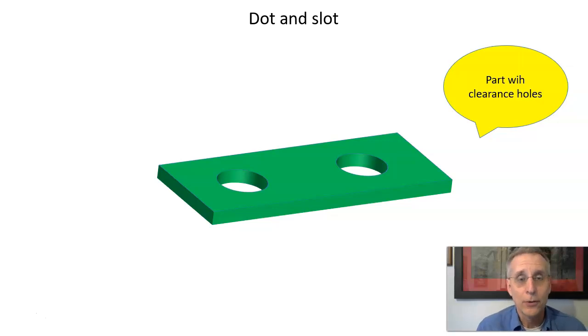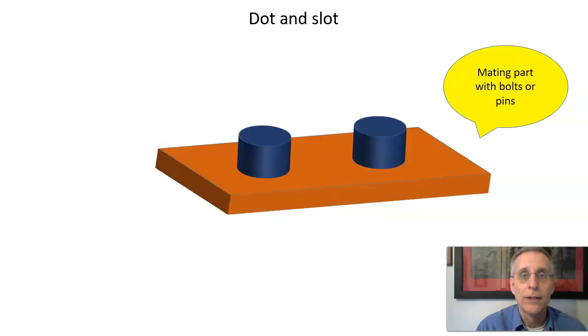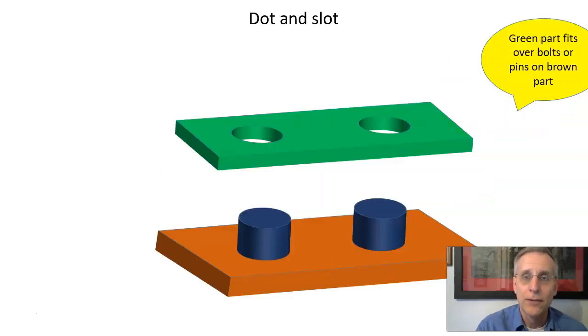So we start out with our little part here. It just has a couple of clearance holes, and these clearance holes are going to want to fit over some kind of a mating part that has either bolts or pins or something like that. And so here's how the parts are going to want to fit together.